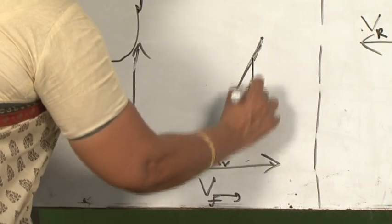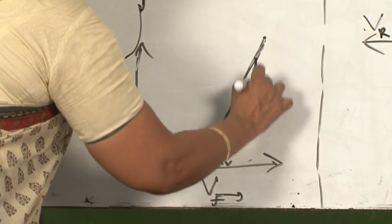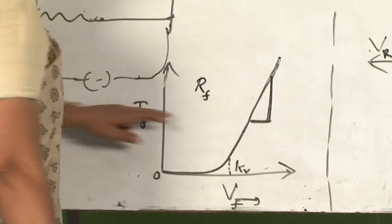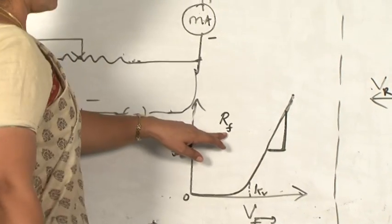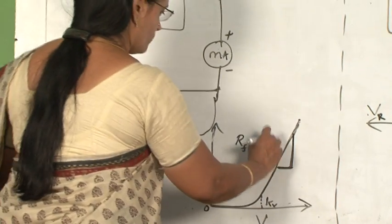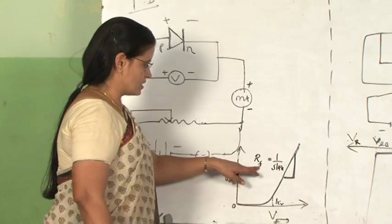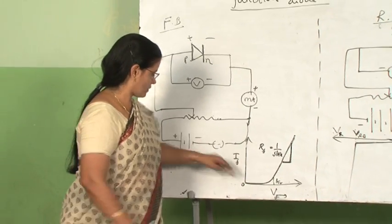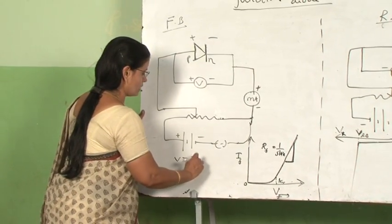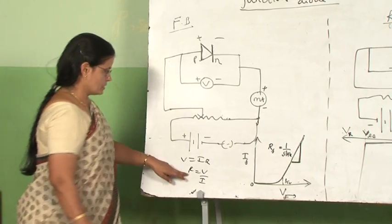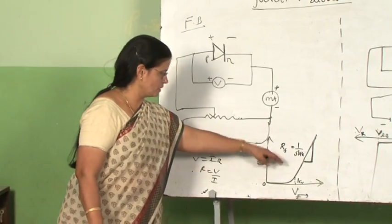So if you calculate the resistance or the slope, if you calculate the slope from this, that will give you forward resistance. Slope of this graph will give you, there is 1 upon slope. 1 upon slope will give you the resistance value because we know resistance is V equal to IR, R equal to V by I. So resistance to get from here, you have to take the 1 upon slope. Then we will get the resistance of the semiconducting diode, that is junction diode, in forward bias.